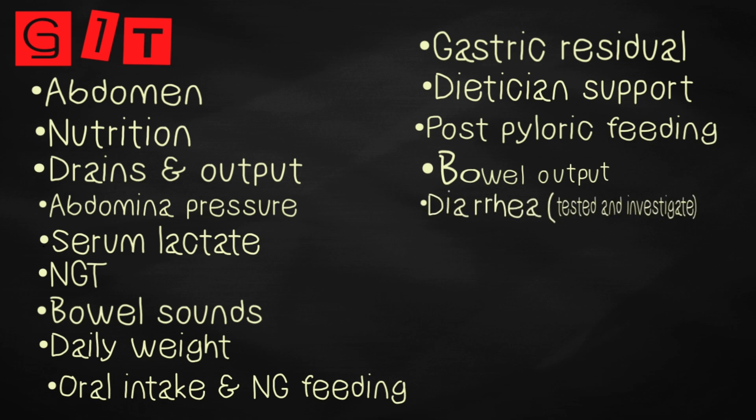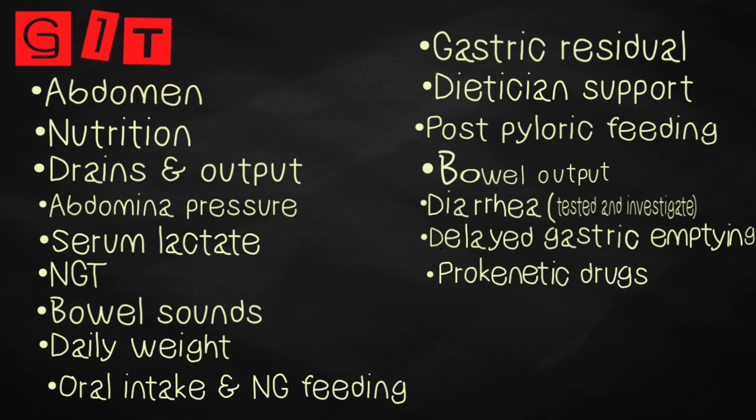Bowel output should be recorded and diarrhea noted and tested for infectious organisms such as Clostridium difficile that causes pseudomembranous colitis. Other causes of diarrhea such as overflow, drugs, high osmolar feed, and intestinal ischemia should be considered. Remember that delayed gastric emptying as indicated by large aspirates from the NG tube is relatively common in critically ill patients and early administration of prokinetics such as metoclopramide or low-dose erythromycin is often required.